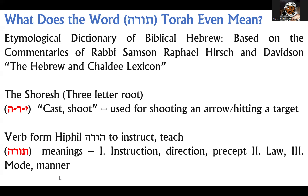That's where we get the definition of the word Torah. So if we have a written Torah, that means it is a written instruction, direction, precept, law, mode, or manner. But then if you say something is an oral Torah — Torah Shebe'al Peh — you're simply saying that someone is orally giving you instruction, direction, a precept, a law, a mode or manner. There's no way to have a written Torah if someone didn't already give you an oral instruction.